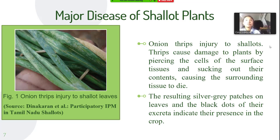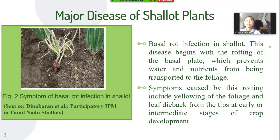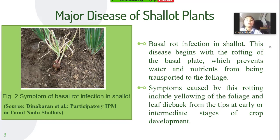The resulting silver-grey patches on leaves and the black dots in their excreta indicate their presence in the crop. A basal rot infection in shallots begins with the rotting of the basal plate, which prevents water and nutrients from being transported to the foliage. Symptoms include yellowing of the foliage and leaf dieback from the tips at early or intermediate stages of crop development.